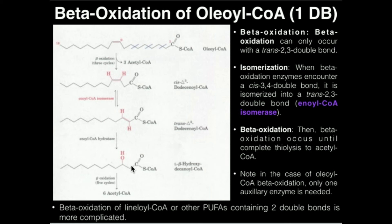So really, when we perform beta-oxidation on monounsaturated fatty acids — meaning fatty acids that have only one double bond — we only need one auxiliary enzyme, and that's because of the cis double bond at the incorrect position. That enzyme is enoyl-CoA isomerase. If we start using beta-oxidation on unsaturated fatty acids that have more than one double bond — generally the limit we deal with is two — beta-oxidation becomes a lot more complicated. We still will have this enzyme, but we will have a second auxiliary enzyme that we'll see in the following video.